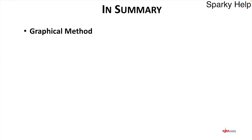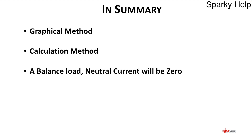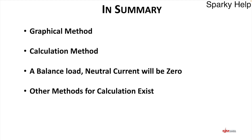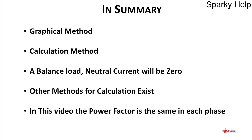In summary: the graphical method involves drawing a triangle to scale, and the calculation method uses the formula. A balanced load will always have a neutral current of zero. Other calculation methods exist, but these assume the power factor in each phase is the same — if it's not, they may not work. Ensure that is correct. Thank you very much.